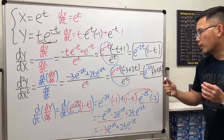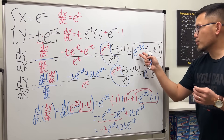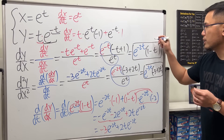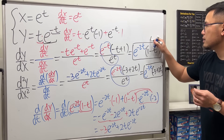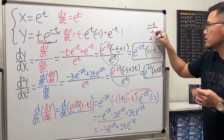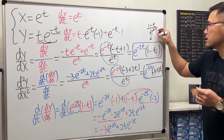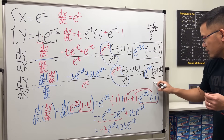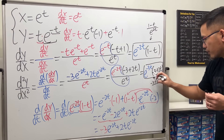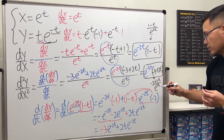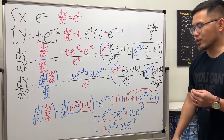Of course, if your instructor wants you to bring the exponent down to the bottom, you can write dy/dx as (1 minus t) over e to the 2t, and d²y/dx² as (negative 3 plus 2t) over e to the 3t. Both forms are correct.